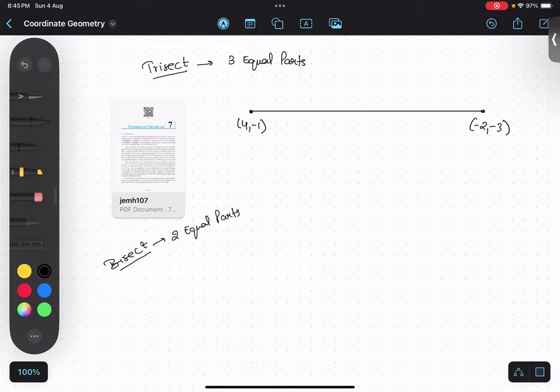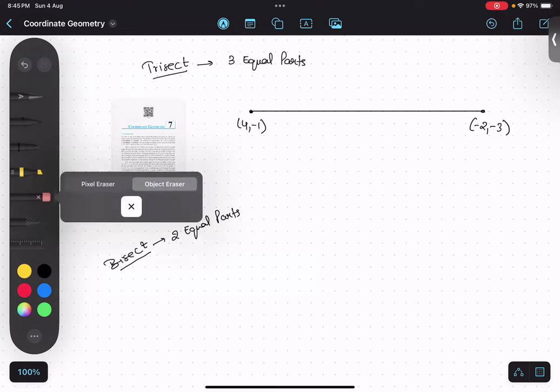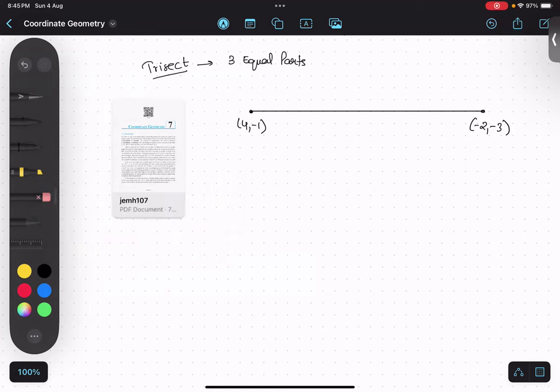I hope you guys know what trisection is now. So one point is over here and one point is over here. It's a rough diagram, so it's absolutely fine. In terms of ratio, that means this part equals this part equals this part. One is to one is to one.